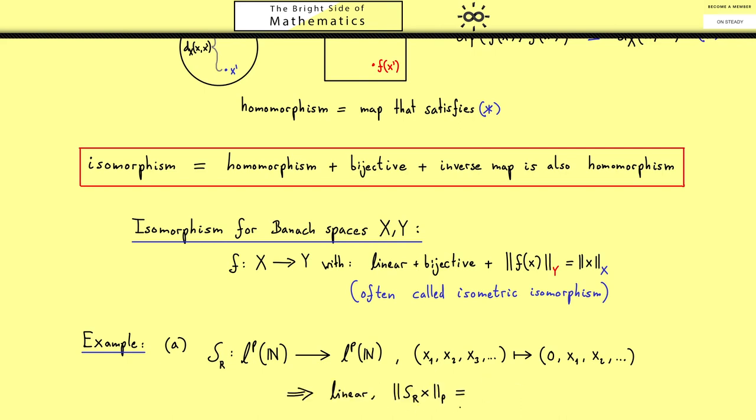Now obviously this is a linear operator and we can easily calculate the operator norm. By writing down the p-norm of the image we immediately see it's the same as the p-norm of x itself. The only thing we changed was the 0 here but a 0 can't change the norm. So that's very nice because we have already two things for our isomorphism. However, you might already see it, it can't be an isomorphism because it's not bijective.